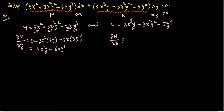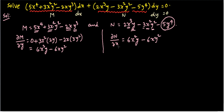For ∂N/∂x, y is treated as constant. The derivative of x³ is 3x², and with the factor of 2 already present we get 6x²y. Then the derivative of x² is 2x, and with the factor of 3 present we get 6xy². The last term, -5y⁴, is constant with respect to x, so its derivative is 0. Thus ∂N/∂x = 6x²y - 6xy².